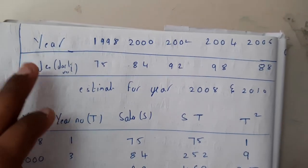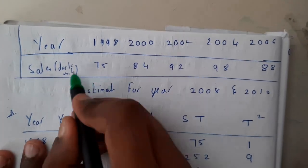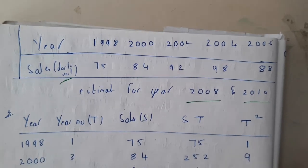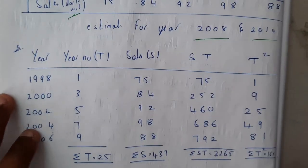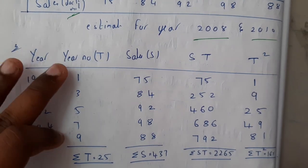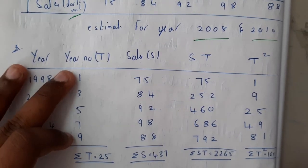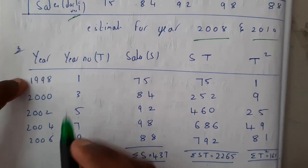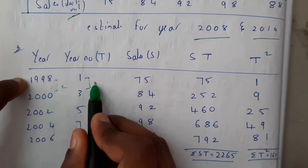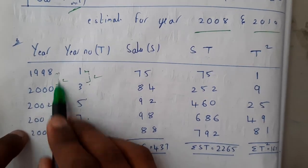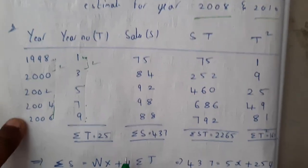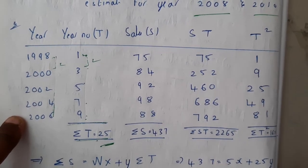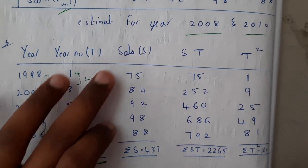In the example, the year and sales in units are given for each year, and we are asked to estimate for 2008 and 2010. First, write the year and the year number — starting from 1, checking the difference. Here the difference is 2, so the year numbers are 1, 3, 5, 7, 9, maintaining a difference of 2. Their sum gives Σ T.